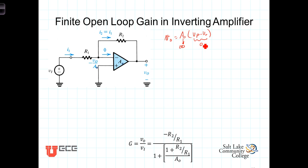And so we have this indeterminate form, infinity times zero, but we calculated the gain using these ideal op-amp approximations. We found the gain to be negative R2 over R1.